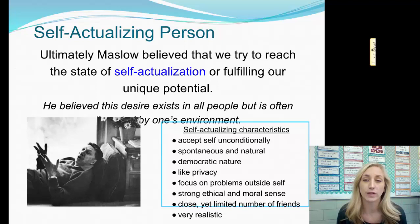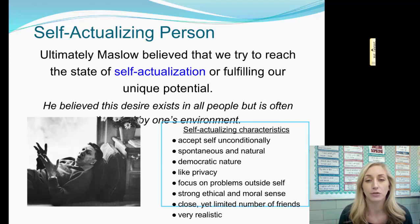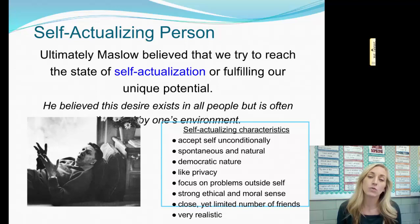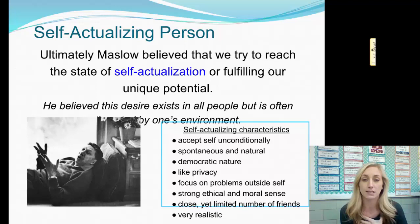Ultimately, Maslow believed that we are trying to reach this state of self-actualization — fulfilling our unique potential. Self-actualization is when you are working hard to become the best you and who you are. He believed this desire exists in all people, but is often not achieved by many because the lower levels of the hierarchy have not been met. Self-actualizing individuals accept themselves unconditionally — 'I am a good person, I accept me. My worth is not dependent on anything external. I am worthy.'